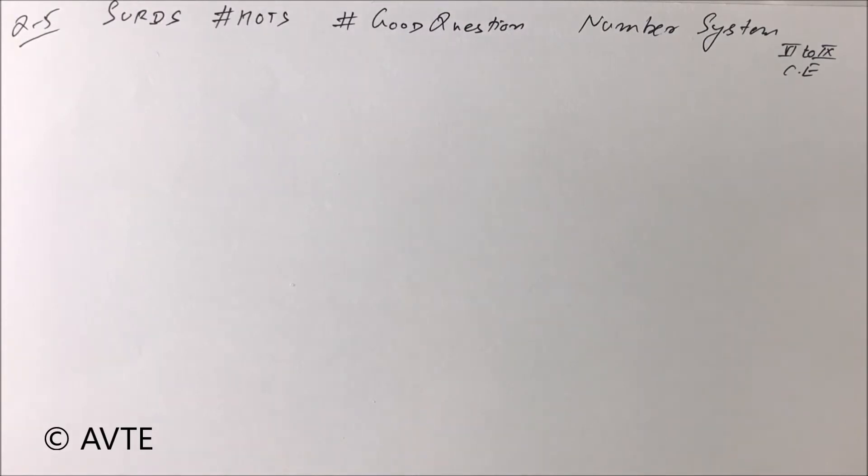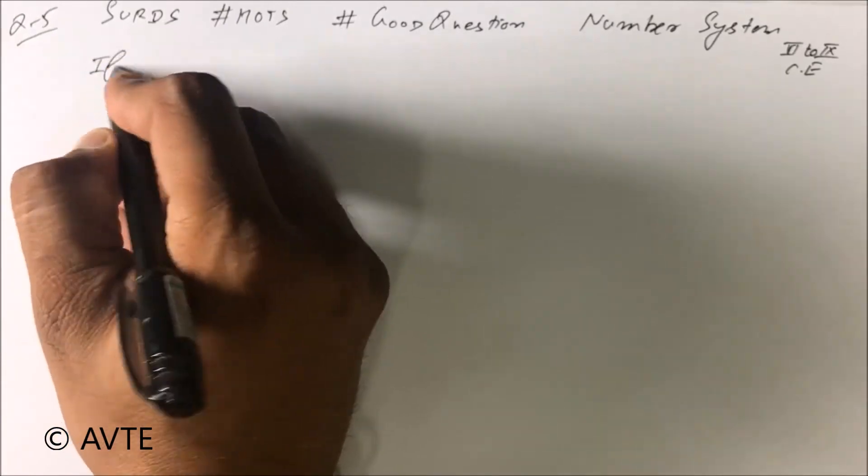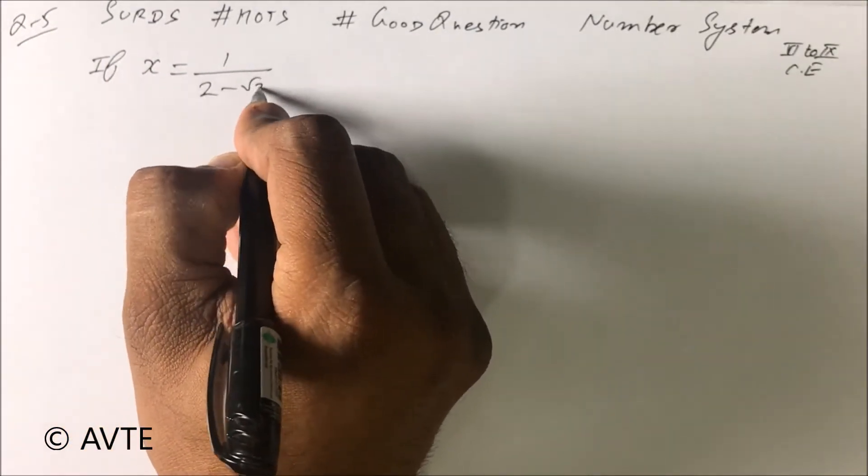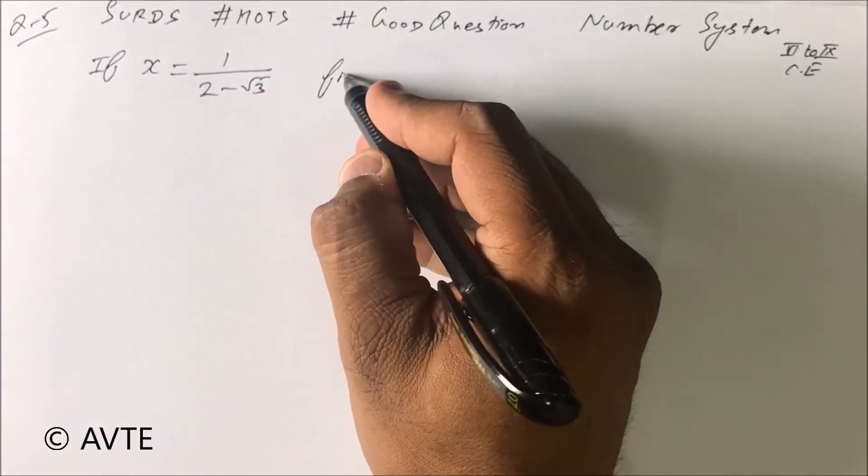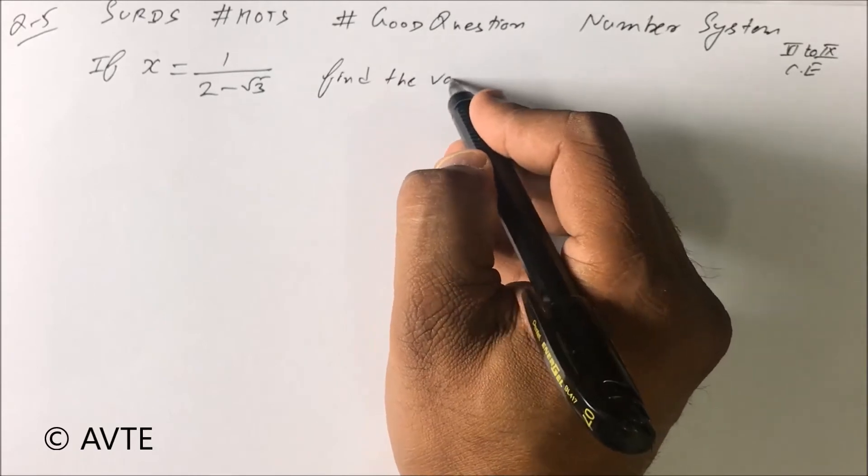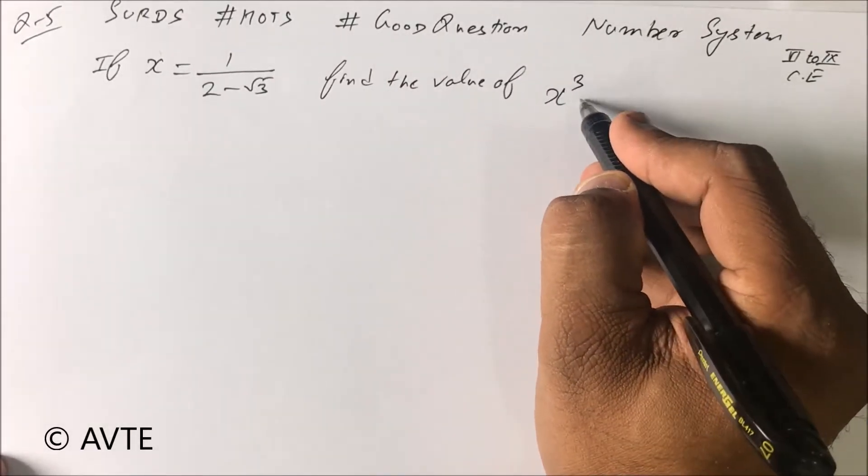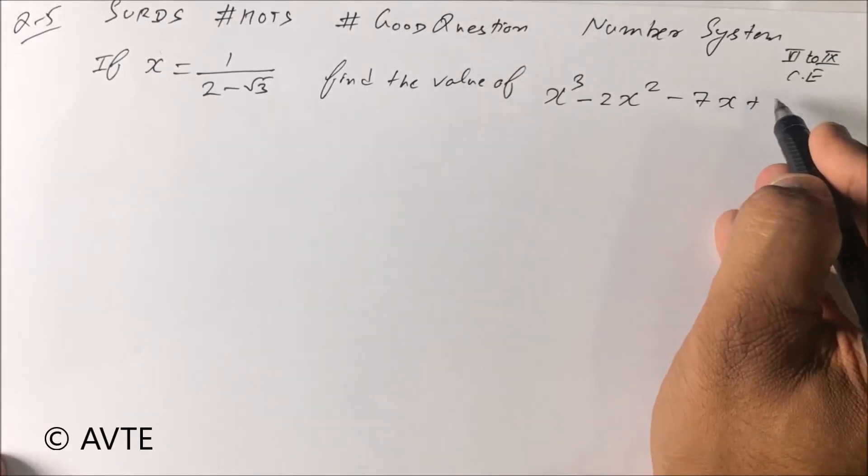Here you go: if X is equal to 1 upon 2 minus root 3, you have to find the value of X³ minus 2X² minus 7X plus 5.